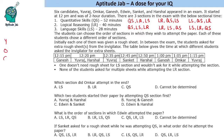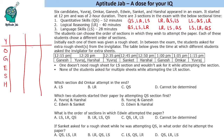The students are Yuvraj, Omkar, Ganesh, Edwin, Sanket, and Harshal. We need to find out in which order each of them attempted the test. We are given additional information: at the beginning of the test they were given a rough sheet, and in between the examination they asked for extra rough sheets from the invigilator. The table gives the time at which different students asked the invigilator for extra sheets.